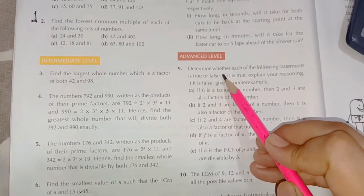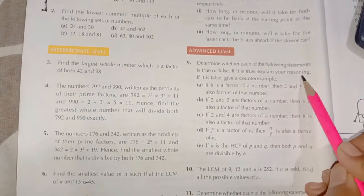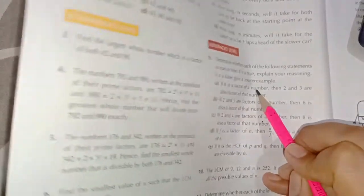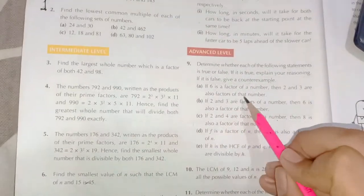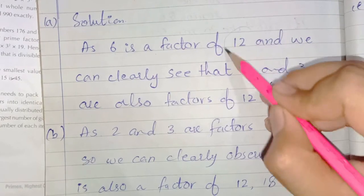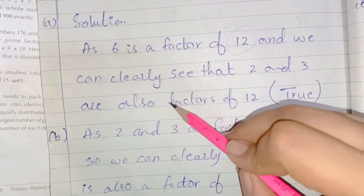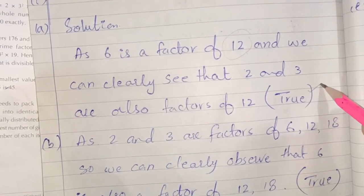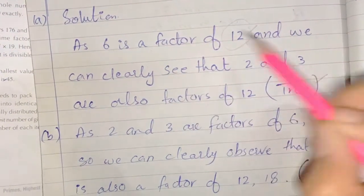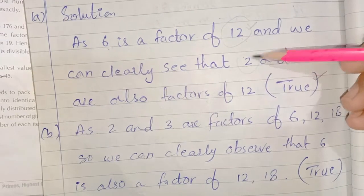Question number 9: determine whether each of the following statements is true or false. If true, explain your reason; if false, give a counter example. Statement A: if 6 is a factor of a number, then 2 and 3 are also factors of that number. Since 6 is a factor of 12, and 2 and 3 are also factors of 12, this statement is true — because 2 and 3 are both factors of 6.